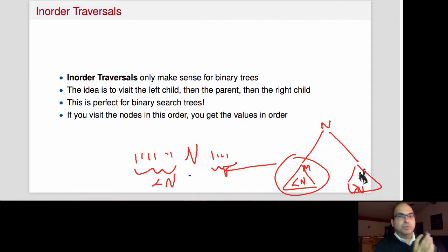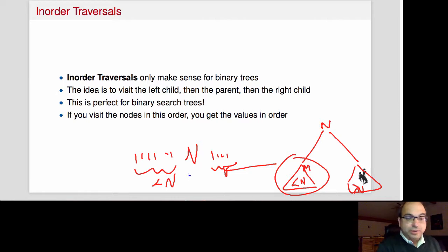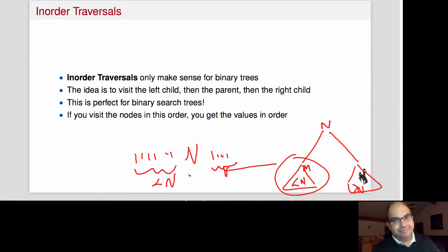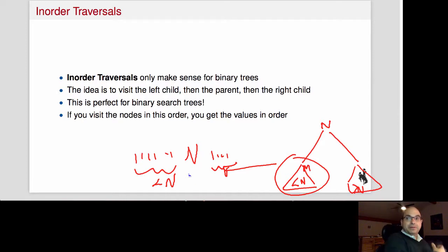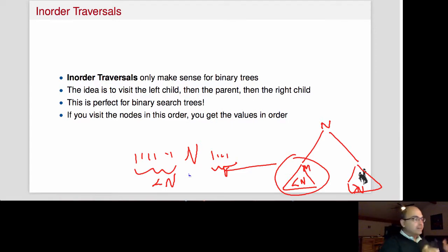In-order traversal on a BST prints in sorted order, and you can see this holds by induction. If the tree has just one element, it's trivially in sorted order. Otherwise, we print the left children — everything smaller than the root — in order, then we print the root, then we print the right children — everything bigger than the root — in order. Combining those gives us the small values, then n, then the big values: sorted order.